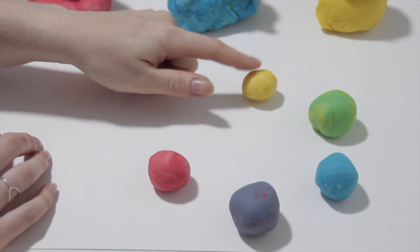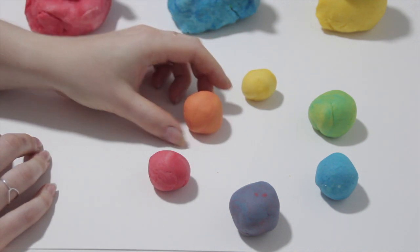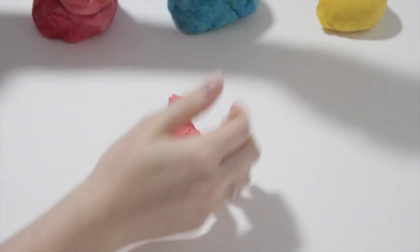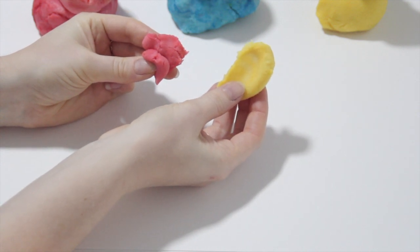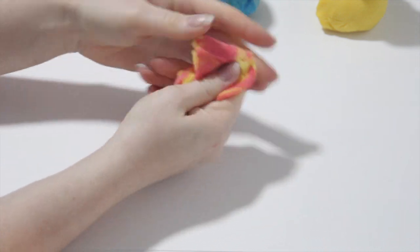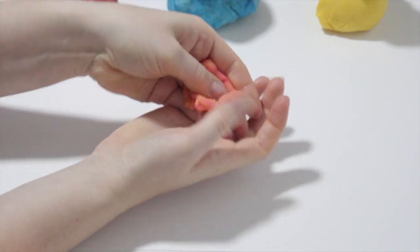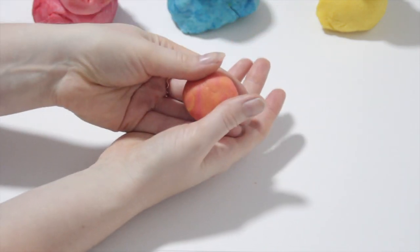When we mix yellow and red together we get orange. So first you'll need some yellow and red. We are going to mix those together over and over again and blend until it creates some orange Play-Doh. And voila, we have orange.